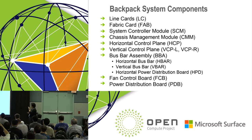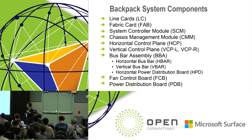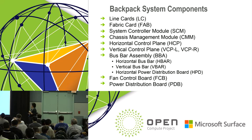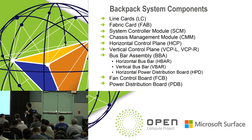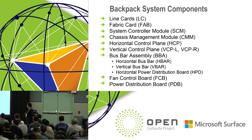So I'm going to talk about some details inside this chassis — the system components. We have a line card, we call it LC. Fabric card, we call it FAB. System control module — that's the ComE CPU module, like a control plane for the ASIC. Chassis management module, the CMM. HCP is the horizontal control plane — that's like a control backplane. Vertical control plane: VCP-L and VCP-R. And the bus bar assembly, which has multiple pieces like HB bar and HPD. Fan control board, FCB, and power distribution board, PDB.